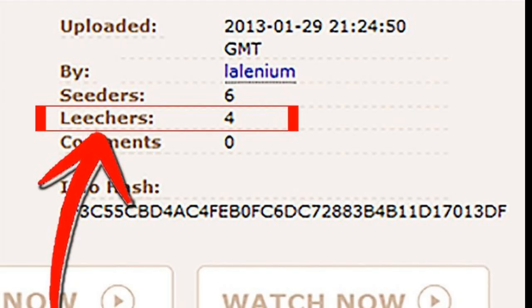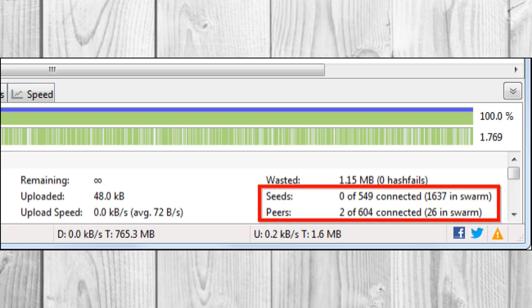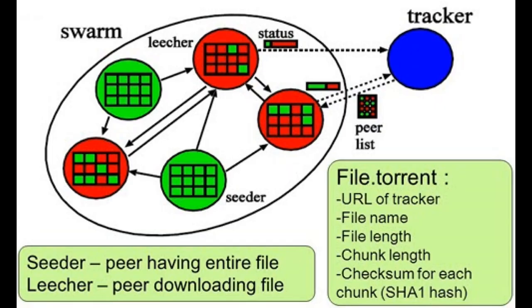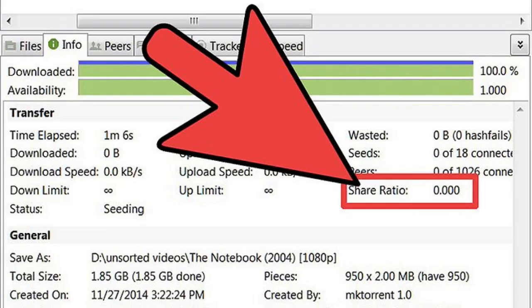Now let's see what leechers and seeders are. Users downloading from a BitTorrent swarm are commonly referred to as leechers or peers. Users that remain connected even after they've downloaded the complete file, contributing their upload bandwidth so others can continue to download, are referred to as seeders. For a torrent to be downloadable, one seeder with a complete copy of all files must initially join the swarm. If a torrent has no seeders, it won't be possible to download, as no connected user has the complete file.